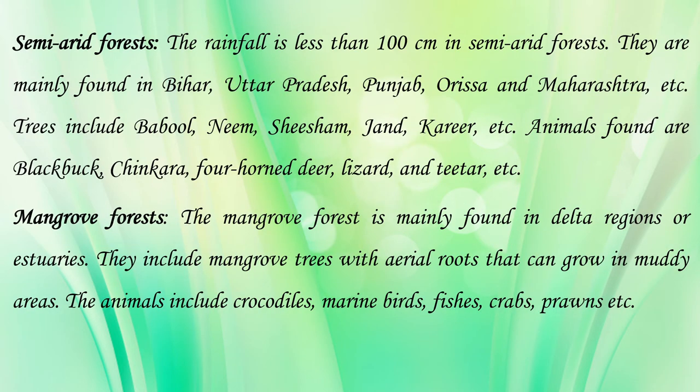In semi-arid forests, rainfall is less than 100 cm. These forests are mainly found in Bihar, UP, Punjab, Odisha, and Maharashtra. Trees include mainly babul, neem, shisham, jand, and karir. Animals found are mainly blackbuck, chinkara, four-horn deer, lizards, and teeter, as well as some milk-yielding animals.